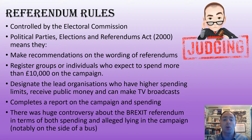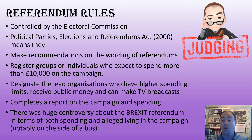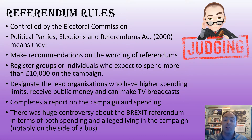Referendums have rules. They are controlled by the Electoral Commission since 2000, and the Political Parties, Elections and Referendums Act 2000 set out the rules and regulations. The Electoral Commission makes recommendations on the wording of referendums — these are advisory and Parliament doesn't have to abide by them, but generally they do. They register all groups or individuals who expect to spend more than £10,000 on the campaign, and they designate the lead organisation on both sides, who then have a higher spending limit, receive public money, and can make TV broadcasts to try to push their side of the argument — all in the name of educating the population about the issue on which they are voting.